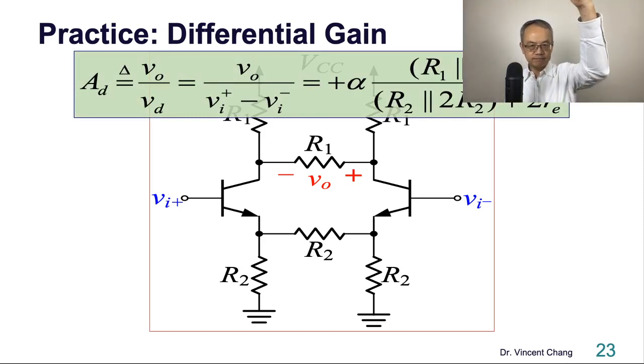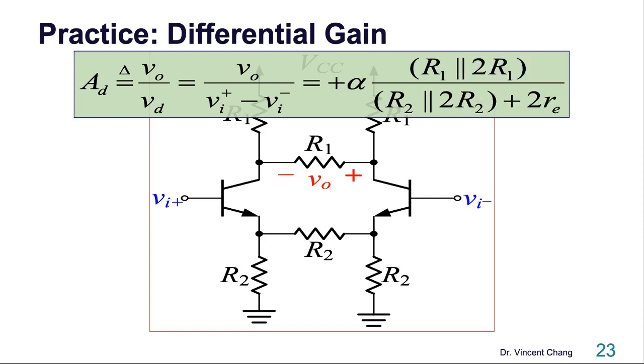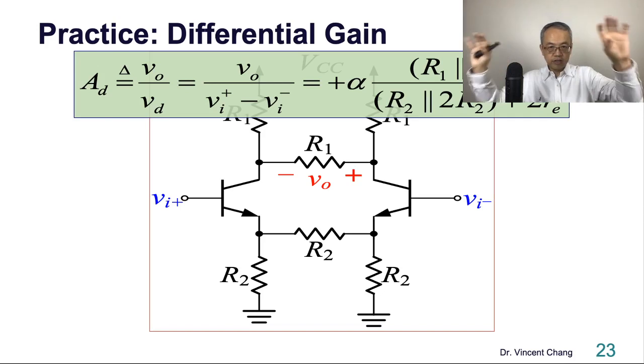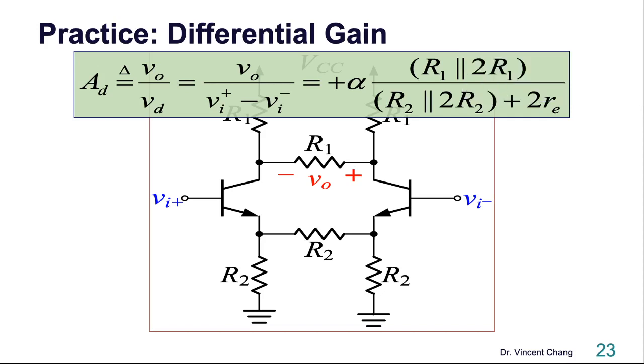Total collector resistance on top. What is the total collector resistance? The two R1 in series and in parallel with R1. What's on the bottom? The one on the bottom is the internal in series with the external. Internal is 2RE in series with the external, two R2 in parallel with R2.